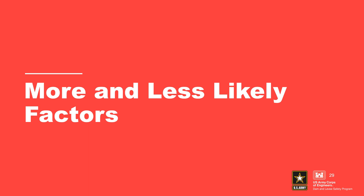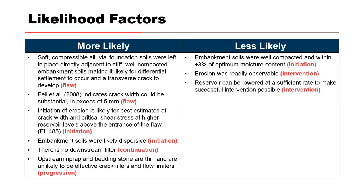When evaluating a potential failure mode, it is helpful to think of more and less likely factors for each node. As shown in the tables, the more likely factors significantly outweigh the less likely factors. Soft, compressible alluvial foundation soils were left in place directly adjacent to stiff, well-compacted embankment soils, making differential settlement and transverse cracking likely. Fellenius 2008 indicates crack width could be substantial and in excess of 5 mm. Initiation of erosion is likely for best estimates of crack width and critical shear stress at higher reservoir levels. The embankment soils were likely dispersive and there is no downstream filter.